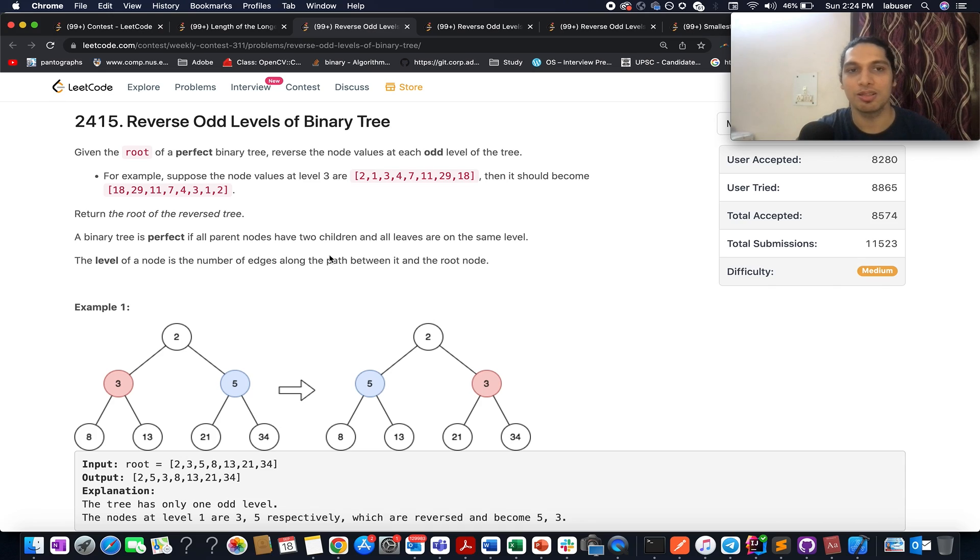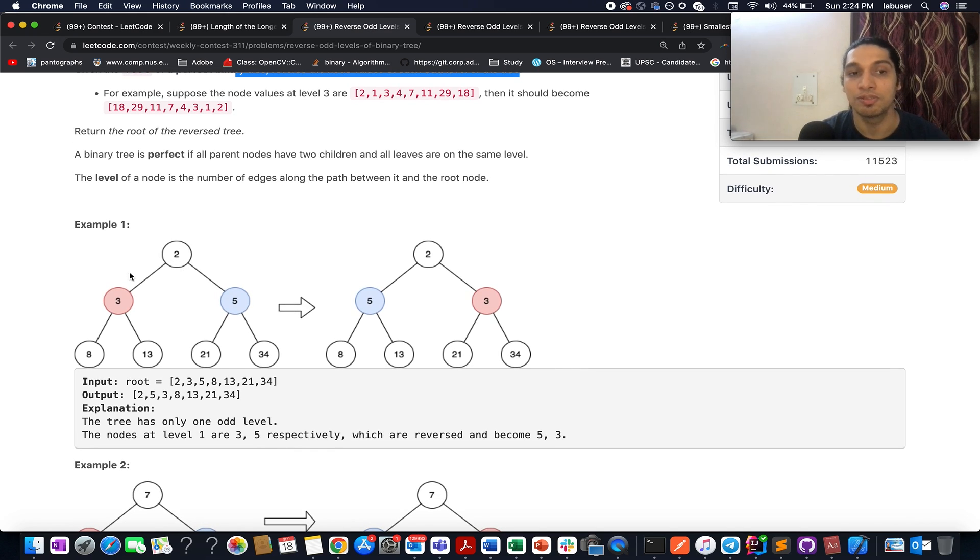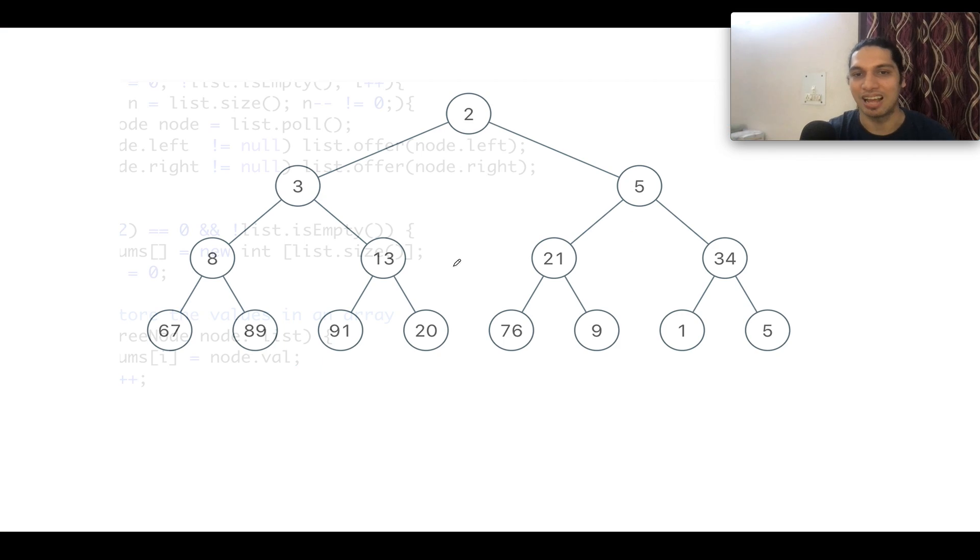What I have chosen is reverse odd levels of binary tree. In this question, we are given a perfect binary tree and what we need to do is reverse the node values at each odd level of the binary tree. The question is pretty self-explanatory. I'll be explaining the algorithm by a test case through the presentation, so let's quickly move on to the PPT.